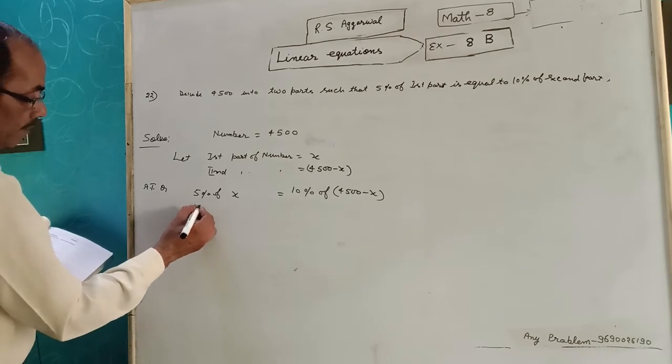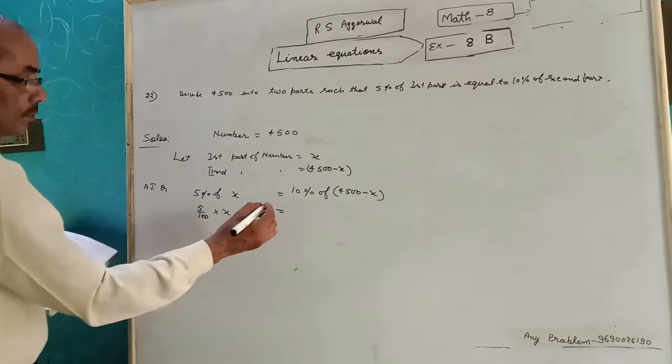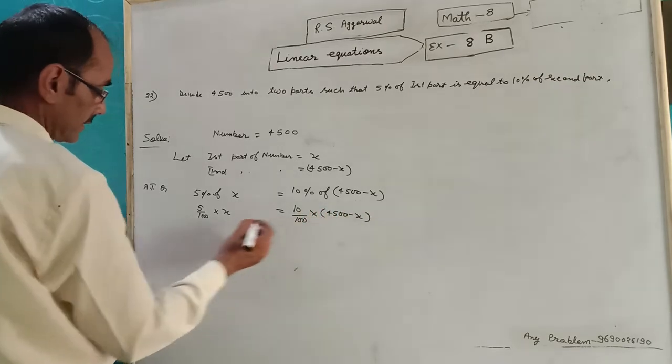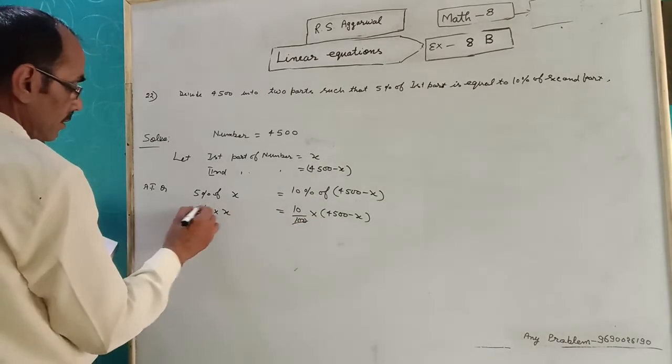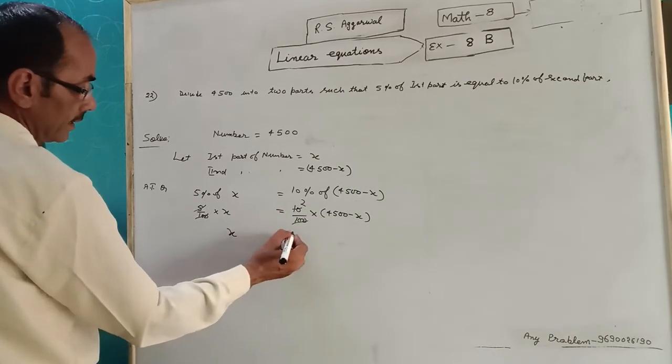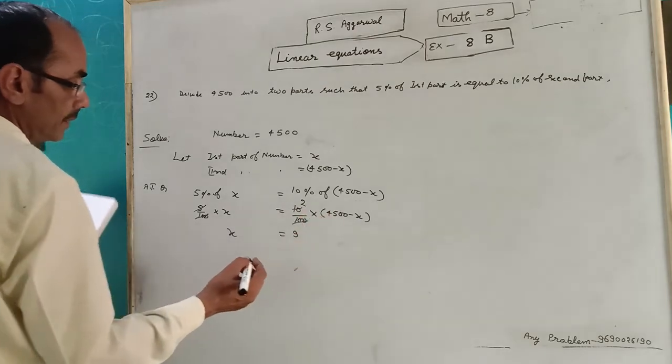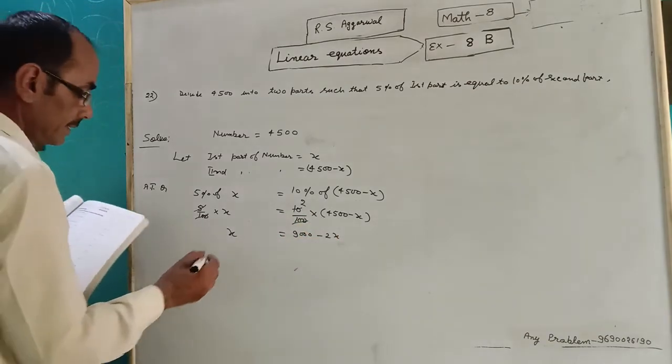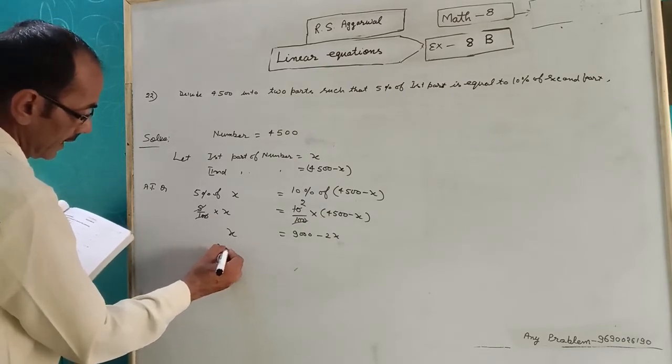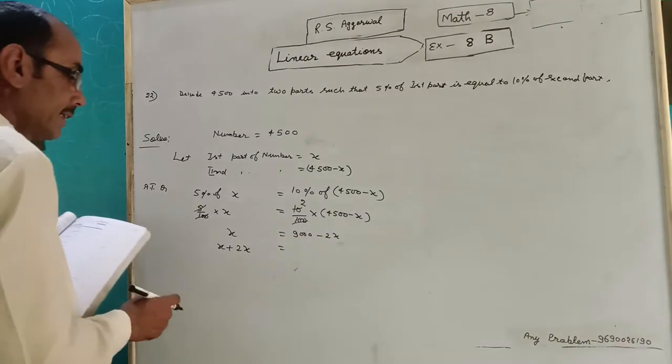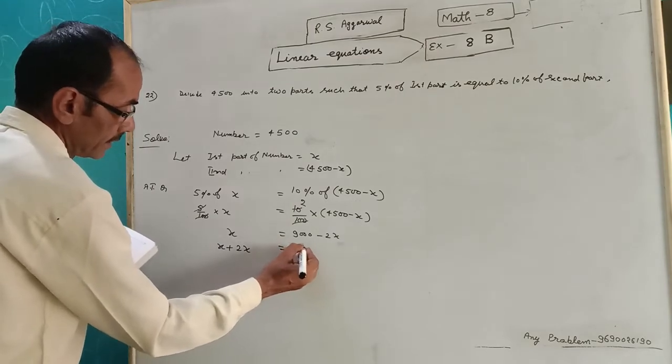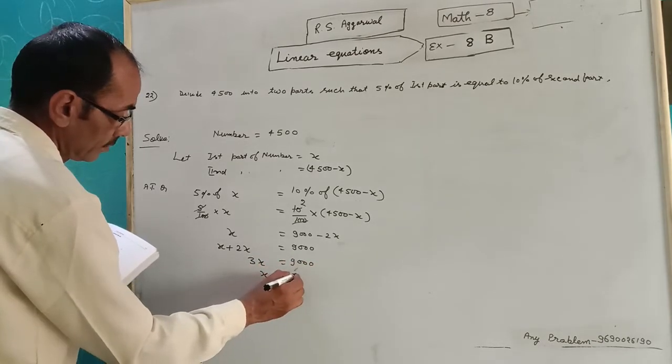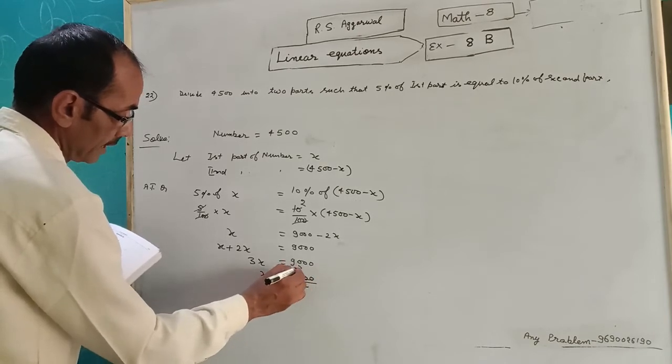5 upon 100 into x is equal to 10 upon 100 into 4500 minus x. 5 to the 10, 2 multiply by x is equal to 9000. Then x plus 2x, x plus 2x to go to the left hand side will be plus 9000.